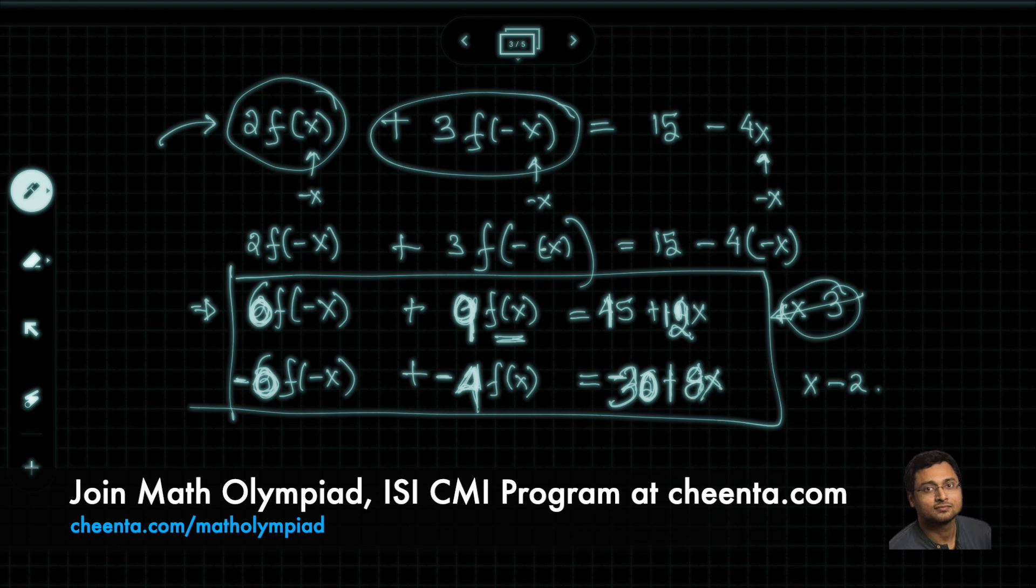Now if you add these two equations, these two cancel. You get 5 times f(x) is equal to 15 plus 20x.